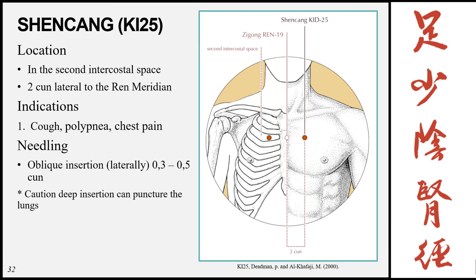Shengkang (Shencang), Kidney 25, is located in the 2nd intercostal space, 2 cun lateral to the Ren meridian. Indications: cough, polypnea, and chest pain. Needling: oblique insertion laterally 0.3 to 0.5 cun. Same caution against deep insertion as this can puncture the lungs.